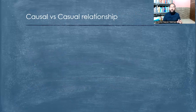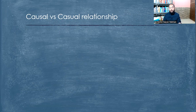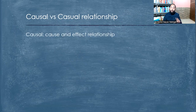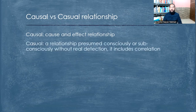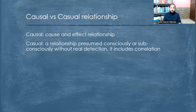Before we proceed, we need to differentiate between causal relationship and casual relationship. Casual relationship is any kind of relationship which is not backed by evidence. On the other hand, causal relationship — which is our objective in research and before formulating a policy — is to identify cause and effect relationship, which helps us determine the reality of a phenomenon or how things are actually working.